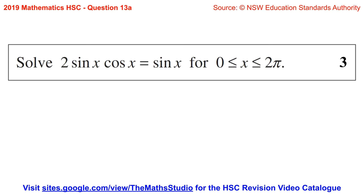Question 13a. Solve 2 sine x cos x equals sine x for x greater than or equal to 0 and less than or equal to 2 pi.